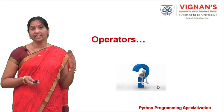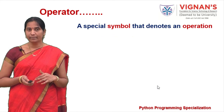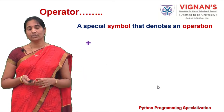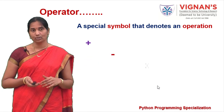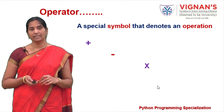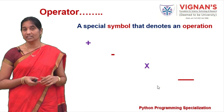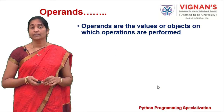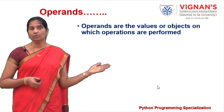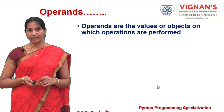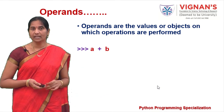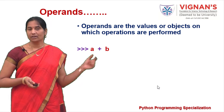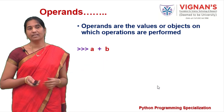Let's understand what operators and operands are. Operators are basically the symbols that denote an operation in any programming language. In mathematical terms we use plus to denote addition, minus for subtraction, and so on. Python also has different symbols for various operations. Consider the operation a plus b — here plus is the operator, and a and b are the operands.